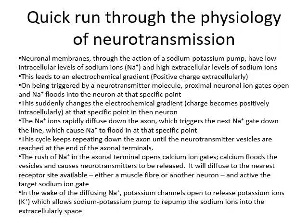I don't know how well you remember your neurophysiology of how the nerve works, but you need to understand how the nerve works in order to understand the concept of plasticity. Let's quickly do a brief run-through of how an action potential spreads from neuron to neuron. Basically, inside the neuron there are low levels of sodium and high levels outside, and this difference is maintained by the sodium-potassium pump, creating an electrochemical gradient with a positive charge outside the neuron.